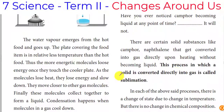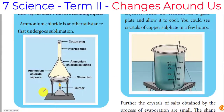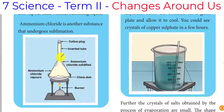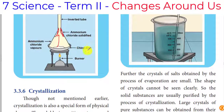Sublimation: this process converts solid directly into gas. Examples include camphor and ammonium chloride. The solid converts into gas, and again we can get back the solid. This is called sublimation.